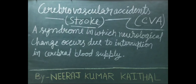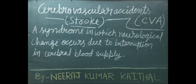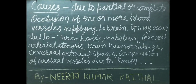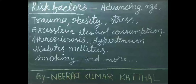Cerebral blood supply means blood supply to the brain's cerebrum part. Important causes of CVA include partial or complete occlusion of one or more blood vessels supplying the brain. It may occur due to thrombosis, embolism, cerebral arterial stenosis, brain hemorrhage, cerebral arterial spasm, or compression of cerebral vessels due to a tumor.